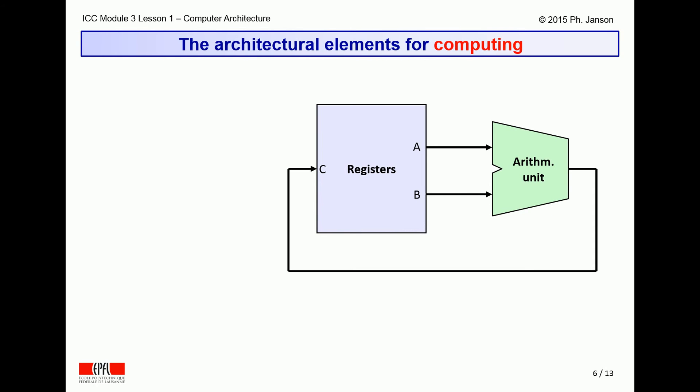Putting arithmetic unit and register bank together, we get this picture, which allows us to visualize the elementary operation of a computer. If the computer wants to execute the instruction ADD into R3, the sum of R3 and R1, for instance, it needs to present these four instruction elements separately.